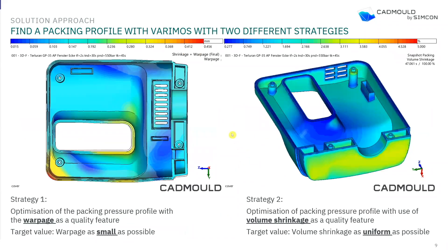Now we will do two different approaches. Strategy one: optimize the packing pressure profile while focusing on the warpage result. Strategy two: do the same variation but focusing on volumetric shrinkage results. Both involve variation of the packing pressure. In strategy one we try to create warpage as small as possible; in strategy two we try to find settings where the shrinkage is as uniform as possible.